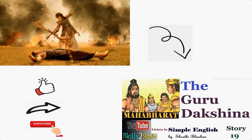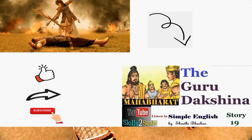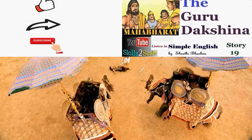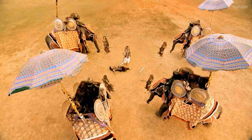Similar looking figures of Drupada appeared and Arjuna is confused. He cannot determine who is the actual Drupada. Before we look at the details of the battle, let me take you to a scene before the battle when Arjuna was about to leave Hastinapur.